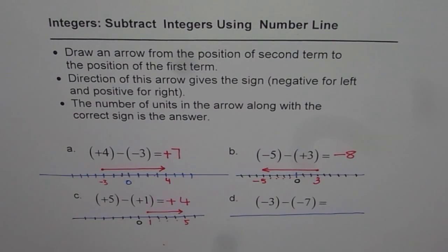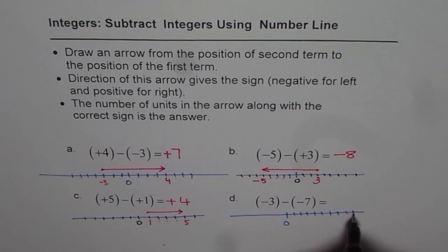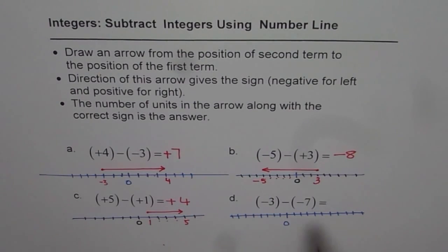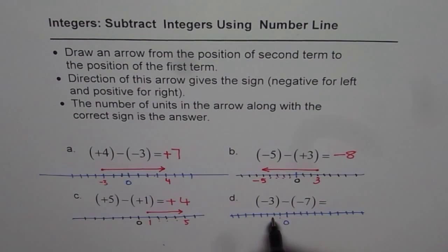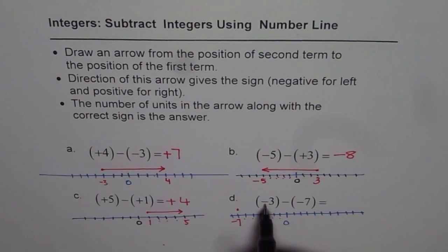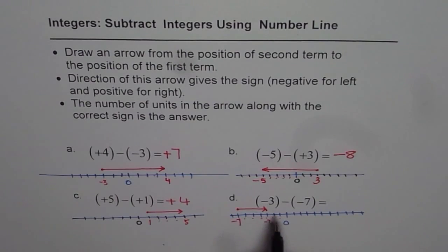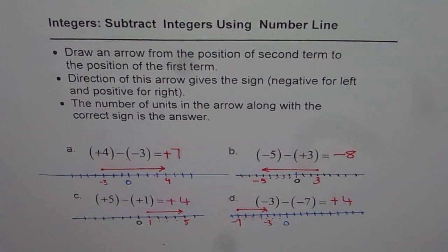The last one. Draw a number line with zero: positive one through ten and negative one through eight. We have to start from minus seven, since we are taking away minus seven from minus three. Minus seven is one, two, three, four, five, six, seven — that is the starting point. The end point is minus three: one, two, three. The arrow goes from minus seven to minus three, which is going right — that means positive. Counting units: one, two, three, four. We get positive four as our answer.